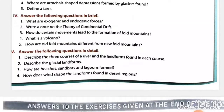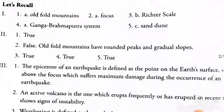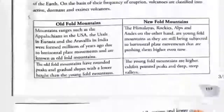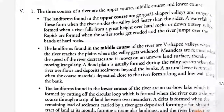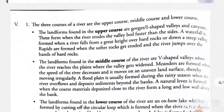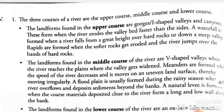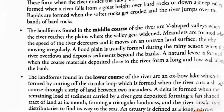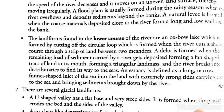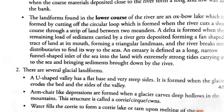The next question covers the three courses of a river: the upper course, the middle course and the lower course. You have to explain these courses, which were already explained during the chapter explanation, so they will not be repeated here.